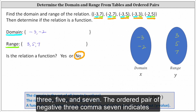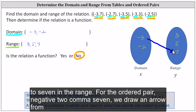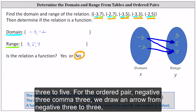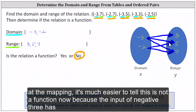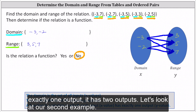The ordered pair negative three comma seven indicates when the input is negative three, the output is seven, so we draw an arrow from negative three in the domain to seven in the range. For negative two comma seven, we draw an arrow from negative two to seven. For negative three comma five, we draw an arrow from negative three to five. For negative three comma three, we draw an arrow from negative three to three. And for negative two comma five, we draw an arrow from negative two to five. Looking at the mapping, it's much easier to tell this is not a function because the input of negative three has three outputs, not exactly one, and the input of negative two has two outputs.